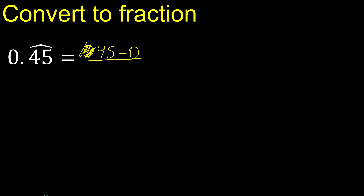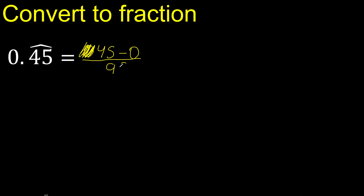Eliminate the zero on this side. After the point, there are 2 numbers with a symbol — therefore, 2 nines. 2 numbers, 2 nines, always 9.